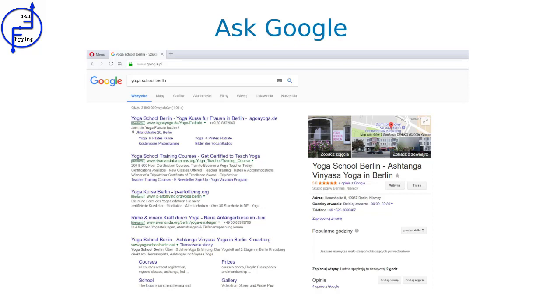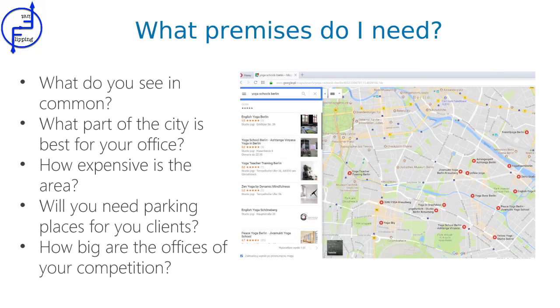But let's say that your industry already exists. See how Google can help with this. From the list, you can see how many similar businesses there are in your neighbourhood. Analyse some of them. See advertisements for premises for rent and use the questions below — you'll be able to estimate your monthly renting costs.